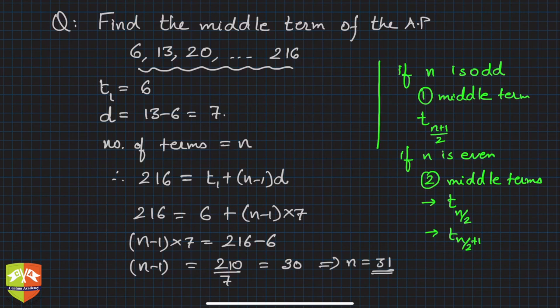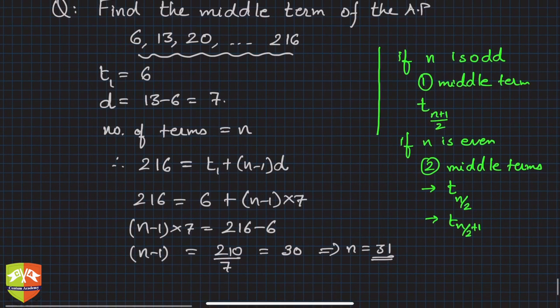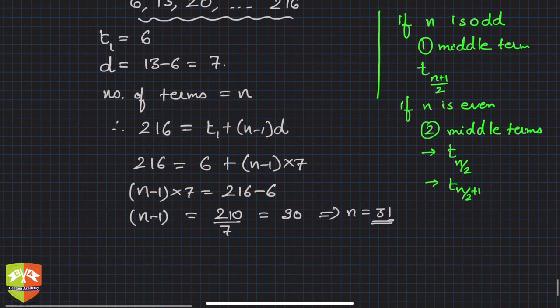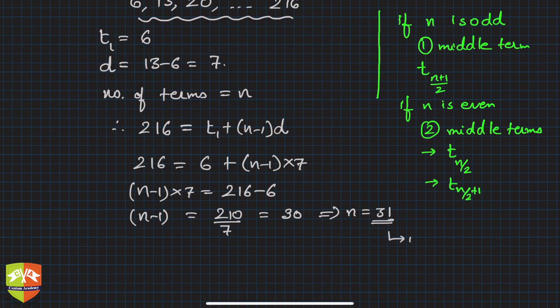So what do we learn? n is 31, which is an odd number. Hence the middle term will be t((n+1)/2), which is t(32/2) = t16. So the 16th term is the middle term.